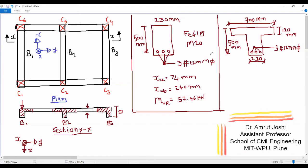Let us answer the second question first. Xub equals Kub multiplied by D, where Kub is the neutral axis factor which is a function of the grade of steel. Xub depends on Kub and D, and is independent of the width of the cross section. Therefore, Xub here as well is going to remain the same and is equal to 240 mm. So if we were to design this cross section as a balanced section, the neutral axis at failure will be at 240 mm from the extreme compression fiber.